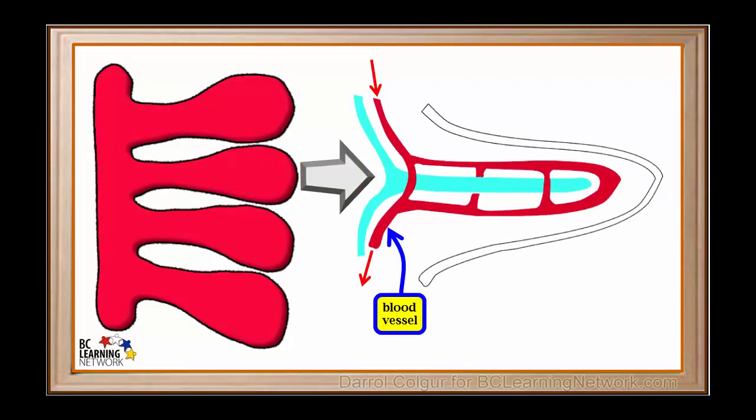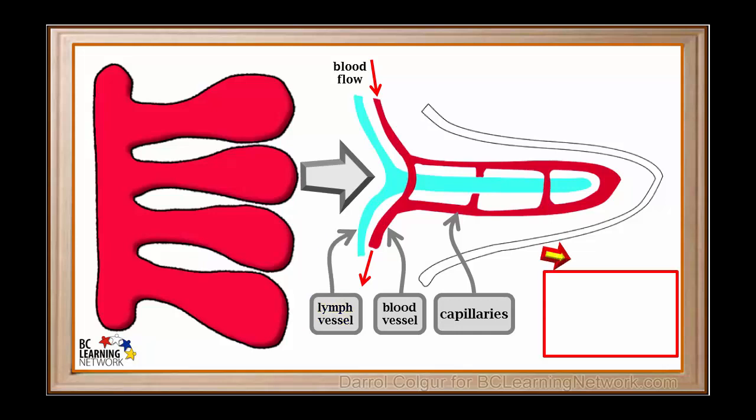Small blood vessels go into each villus. These red arrows show the direction of blood flow in this case. The blood vessels branch into tiny capillaries inside the villus. Lymph is a liquid that travels throughout the body. Lymph vessels also go into each villus. The small intestine contains various nutrients resulting from digestion in the mouth, stomach and duodenum. We'll represent these with symbols in this table.